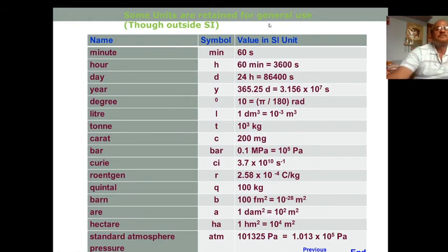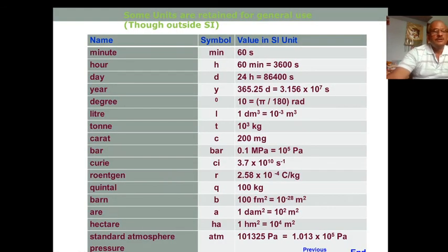Now some units which are in general use: minute, whose value is given here in SI units, hour that is 3600 seconds. Similarly, the day. One year, symbol is y, but one year equals 3.156 × 10^7 seconds. Degree, that is π/180 radian. Similarly, bar, that is 10^5 Pascal, and another one, atm, that is standard atmosphere pressure, 1.013 × 10^5 Pascal.